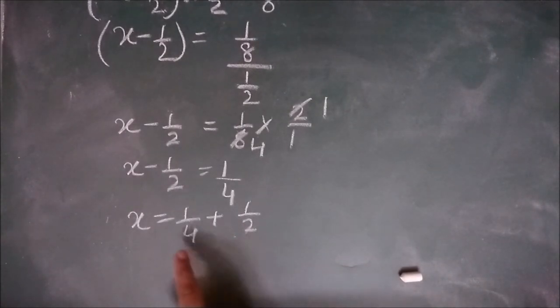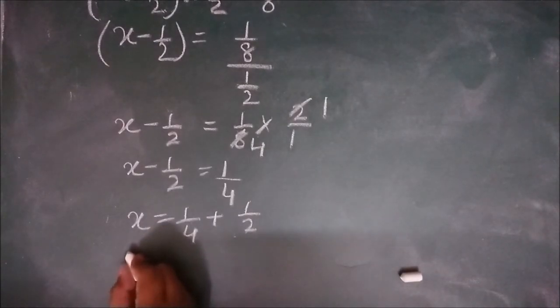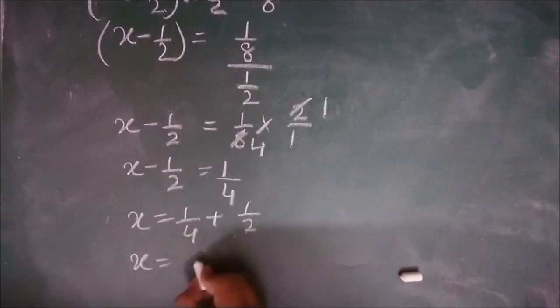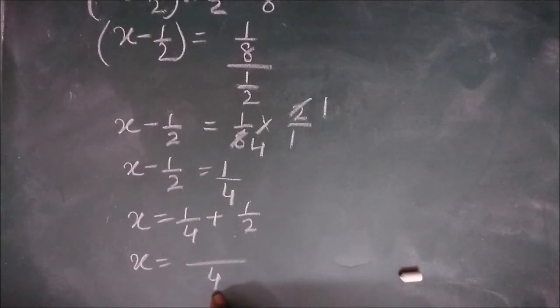When you solve this, you will have to make the denominators same. So x is equal to the denominator is 4. How? You will have to take the LCM of 4 and 2.